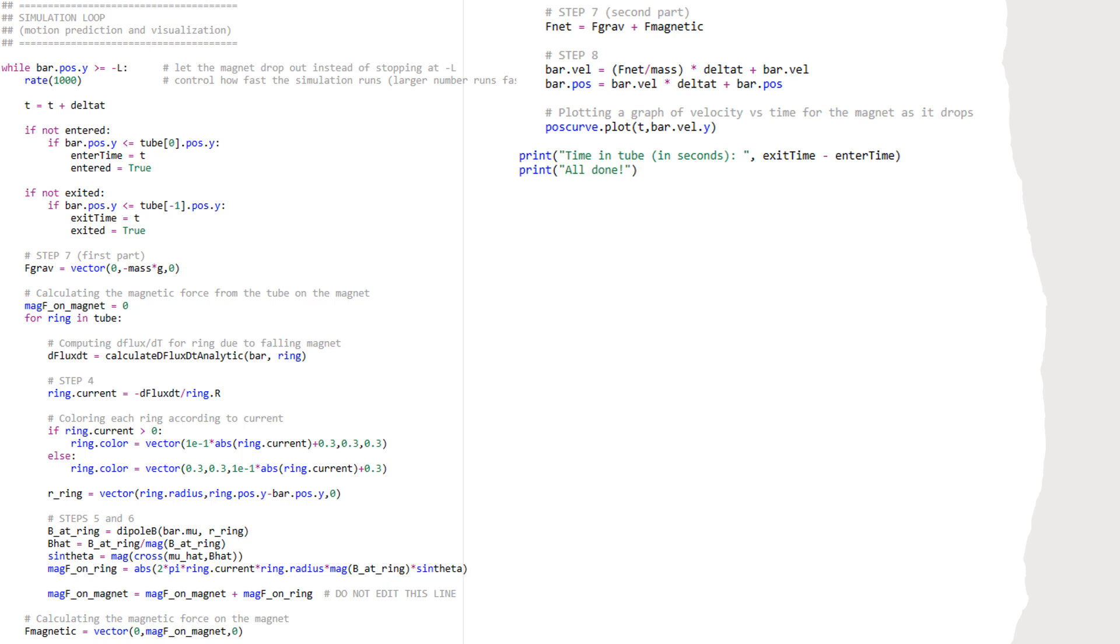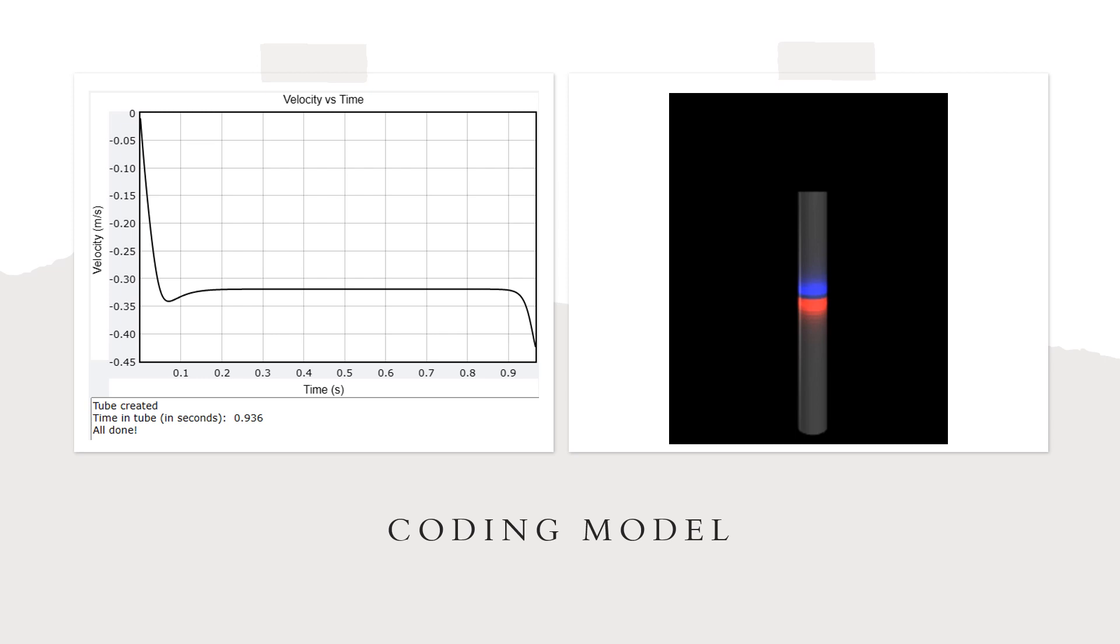Finally, we calculated the magnet's velocity and position from Newton's second law equations and using data from the code. A plot of velocity versus time was created for the magnet as it fell.